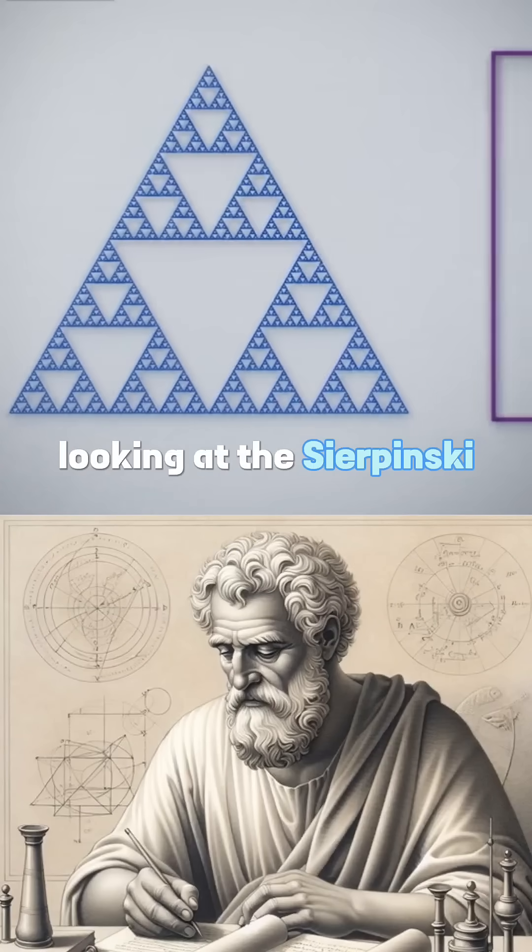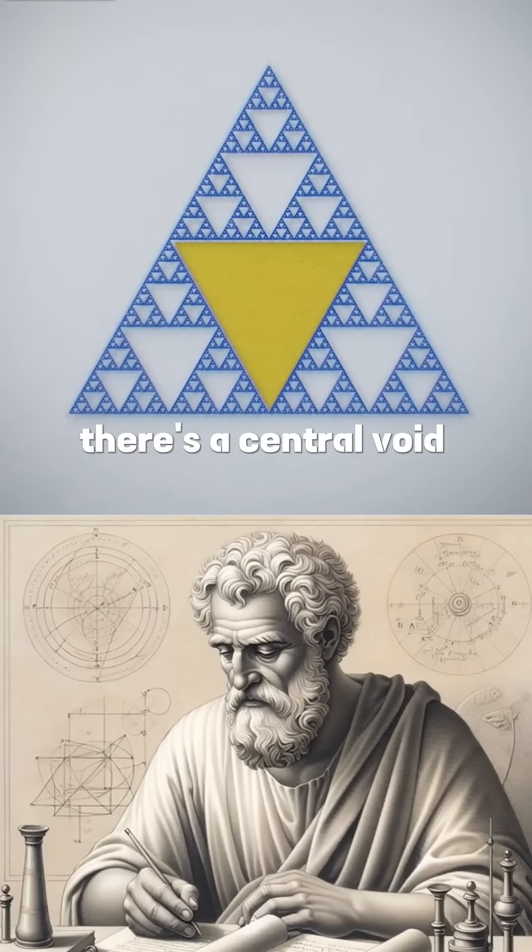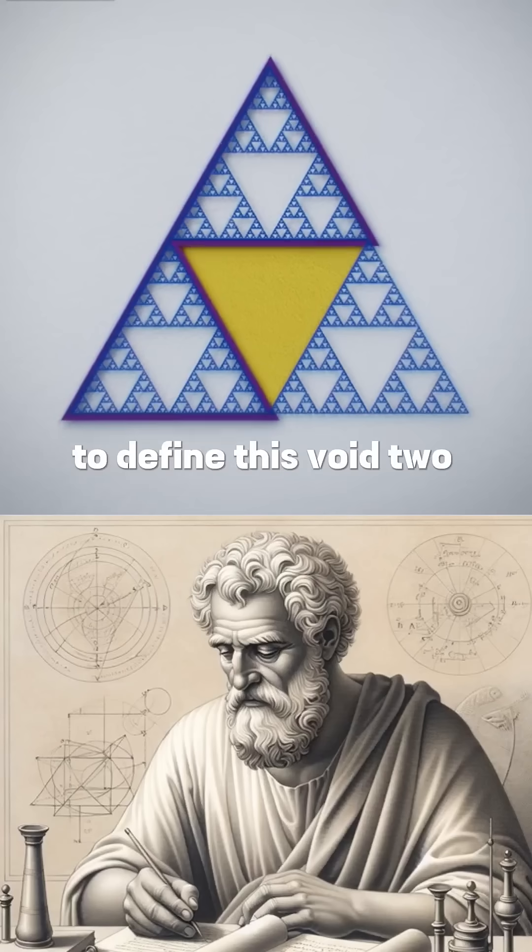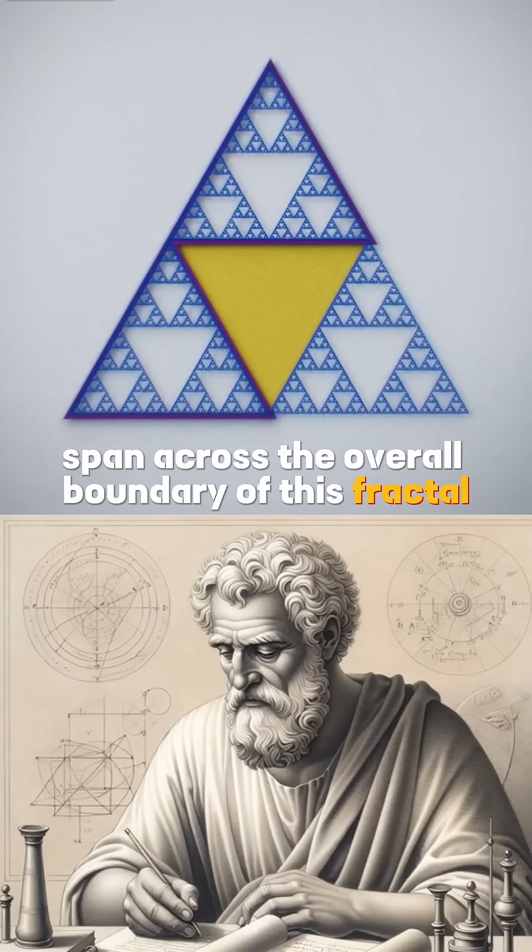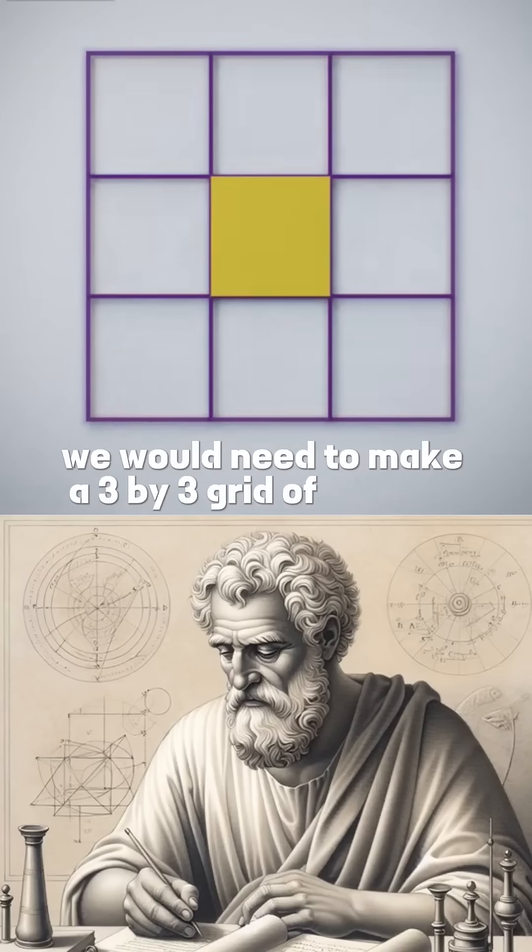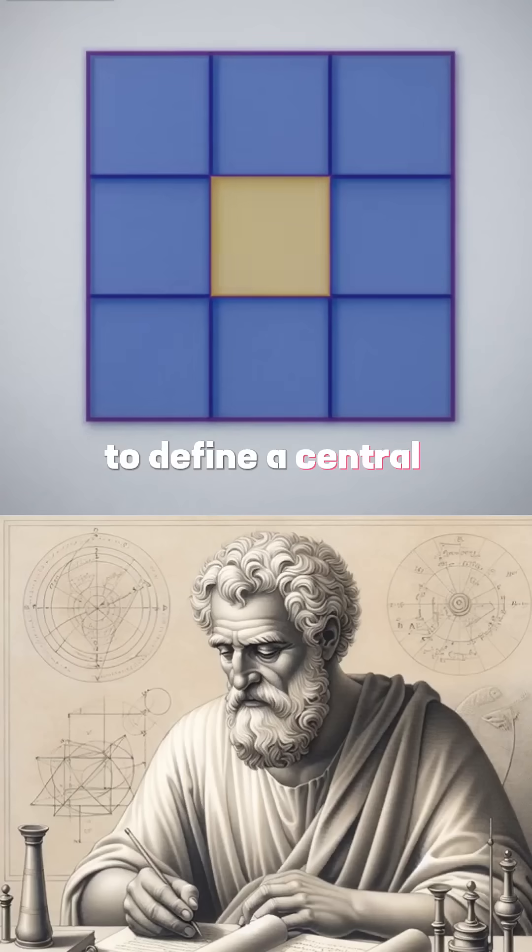Looking at the Sierpinski triangle, there's a central void made by the outside triangles. To define this void, two larger triangles span across the overall boundary of this fractal. To make a similar central void in the square, we would need to make a 3 by 3 grid of squares to define a central space in the middle.